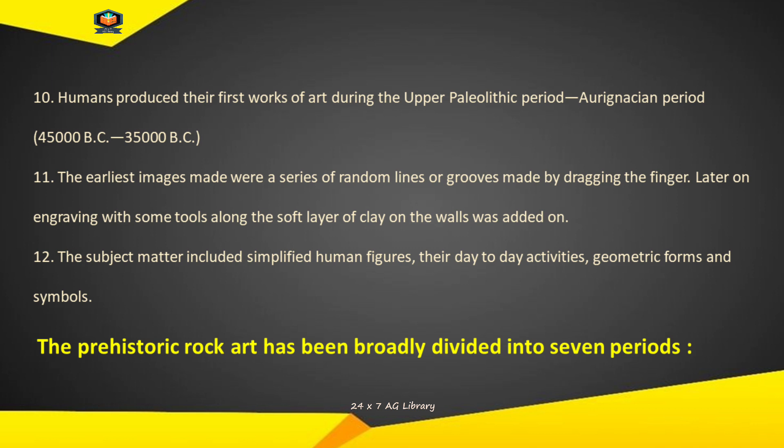Point 11: The earliest images made were a series of random lines or grooves made by dragging the finger. Later, engraving with some tools along the soft layer of clay on the walls was added. Sabse pehle banayi gayi chhaviyan ungali ko kheench kar banayi gayi yaadrichchhik rekhaon ya khaanche ki ek shrinkhala thi. Baad mein deewaaron par mitti ki naram parat ke saath kuch auzaaron ke saath utkeerna kiya gaya. Point 12: The subject matter included simplified human figures, their day-to-day activities, geometric forms and symbols. The prehistoric rock art has been broadly divided into seven periods.